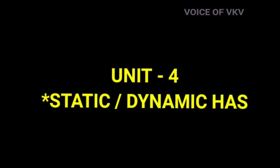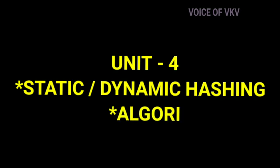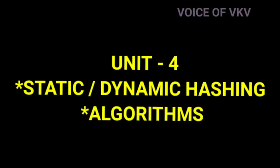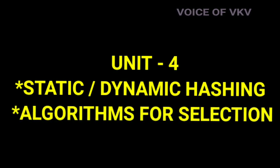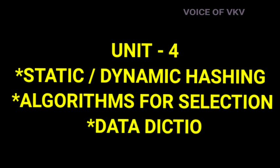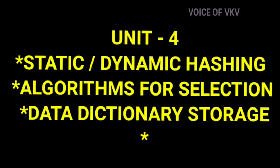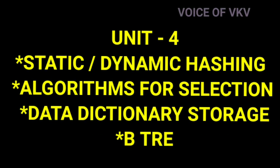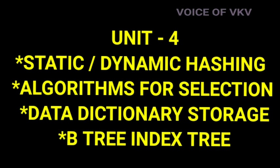Unit 4 has a total of four important topics. The first one is Static or Dynamic Hashing, the second is Algorithms for Selection or Sorting, the third is Data Dictionary Storage and Cost Estimation, and the fourth is B-Tree Index or Query Processing. These four topics are important for Unit 4.